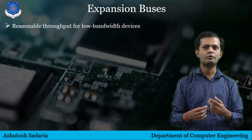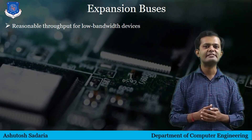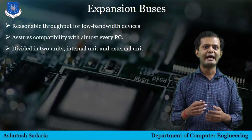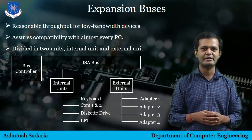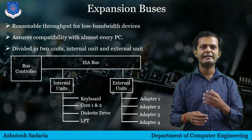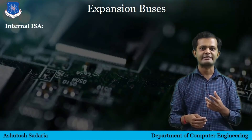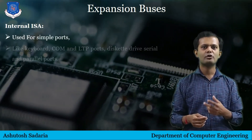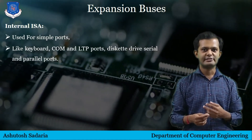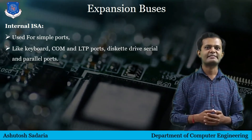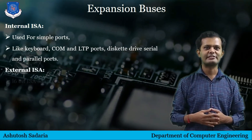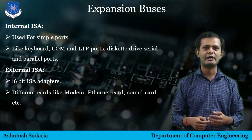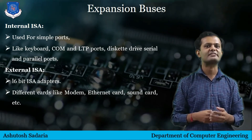The ISA bus provides reasonable throughput for low-bandwidth devices and virtually assures compatibility with almost every PC on the market. As you can see from the diagram of internal and external units of the ISA bus, it is divided into two units: the internal unit and the external unit. The internal ISA bus is used for simple ports like keyboard, common LPT ports, disk drive, and serial and parallel ports. The external expansion bus can be connected to 16-bit ISA adapters, allowing you to connect cards like modems, Ethernet cards, and sound cards to expand the functionality of the computer.